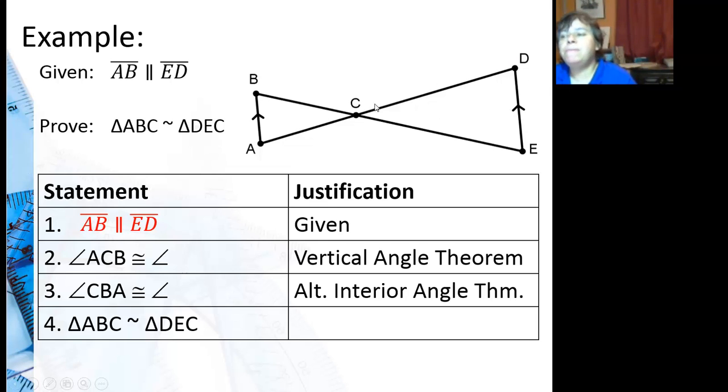And then it's referencing the vertical angle theorem. Well, where are the vertical angles on this? I know one of them is angle ACB. What's the angle across from that? Well, that would be DCE. DCE goes with ACB.